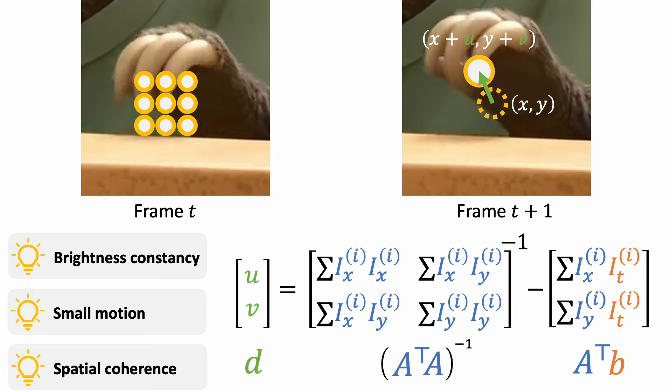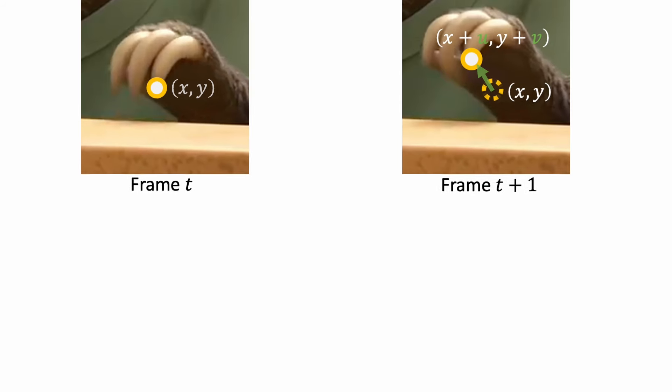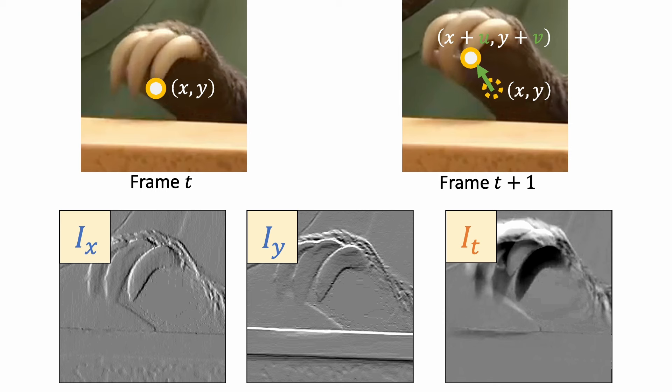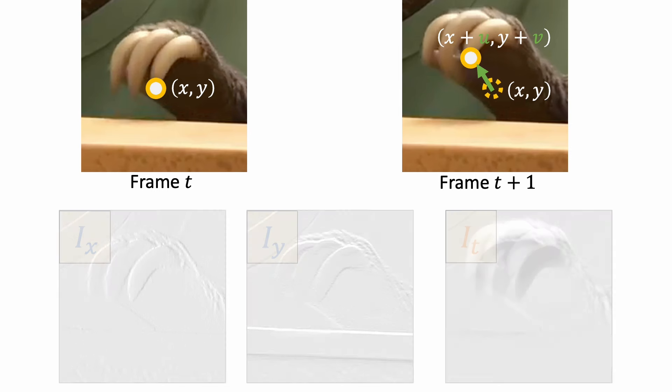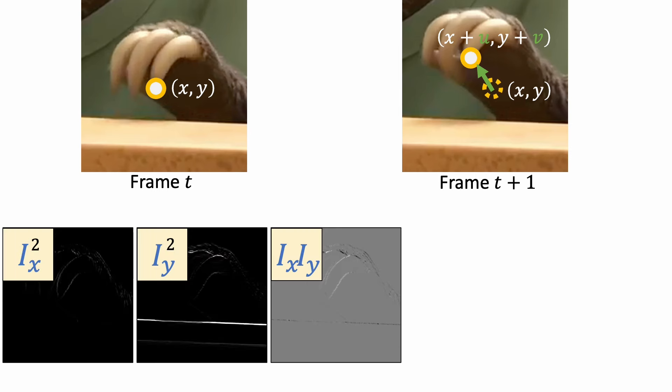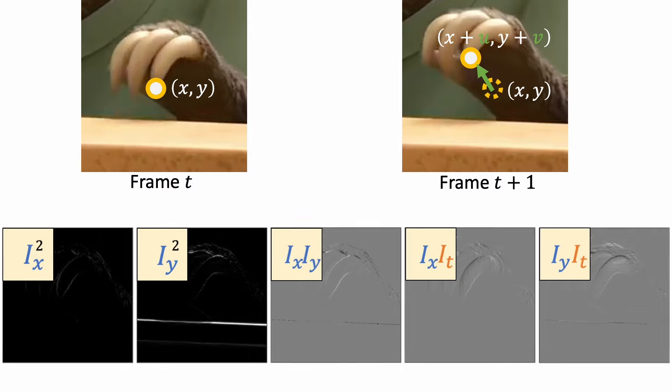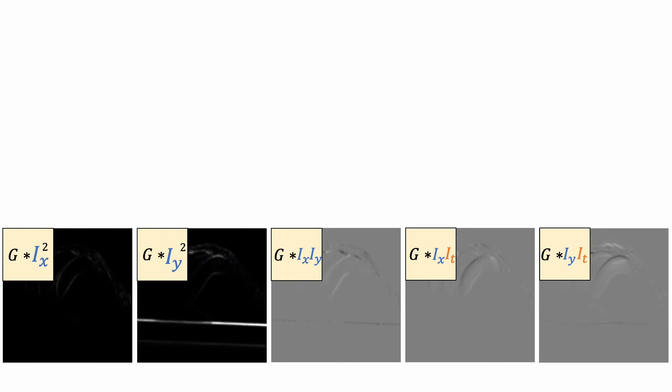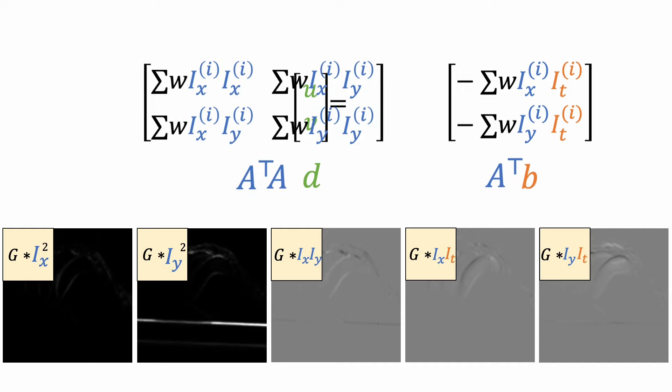Let's visualize the algorithm. From a frame at time t, we compute the x and y derivative using gradient filters. We can compute the temporal derivative using frame difference. We then compute these terms using element-wise multiplications. Next, we compute the weighted local average using a Gaussian filter. We can now estimate the motion using the least square solution.